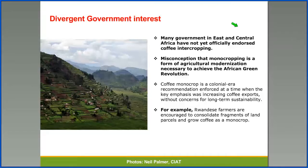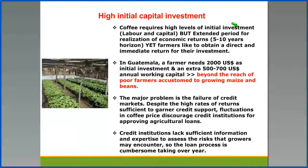Secondly, there are divergent government interests with regard to coffee-banana intercropping. Many governments in East and Central Africa have not yet officially endorsed coffee intercropping. This is mainly because of a misconception that monocropping is a form of agricultural modernization necessary to achieve the African Green Revolution — for example, when farmers are encouraged to consolidate fragmented land parcels and grow coffee as a monocrop.